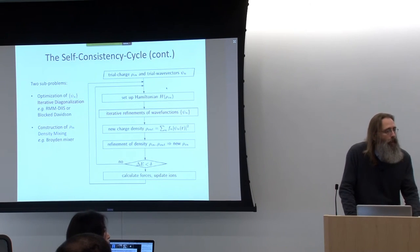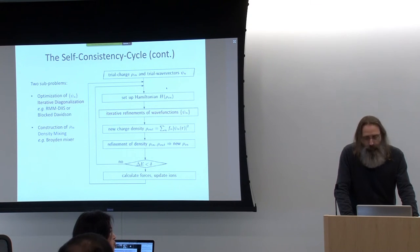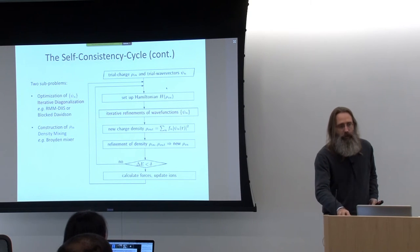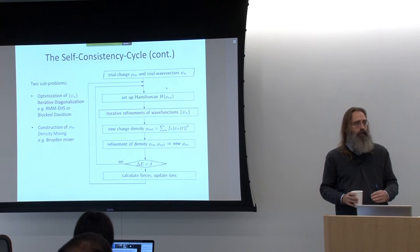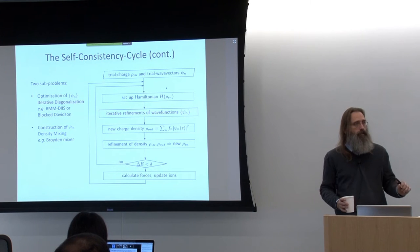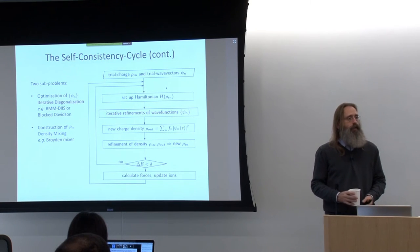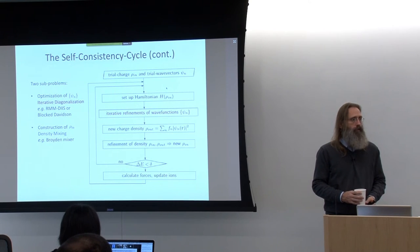When starting the self-consistency cycle, we need a trial charge density. The first one is commonly constructed from atomic charges — the atomic charge density is also information carried on the POTCAR file. The program takes all atomic positions and puts atomic charge densities on their respective positions as the initial charge density. That is the standard behavior and a quite good common choice.